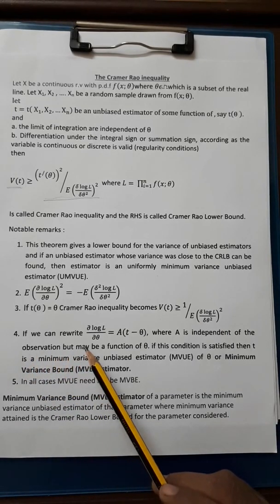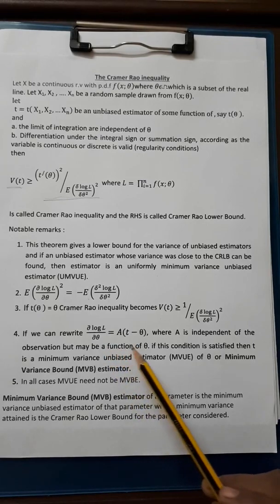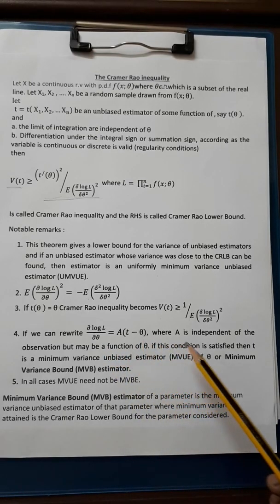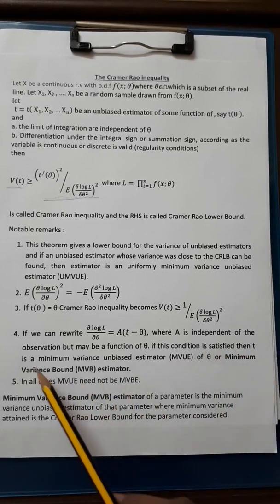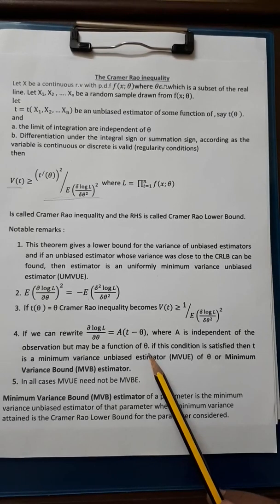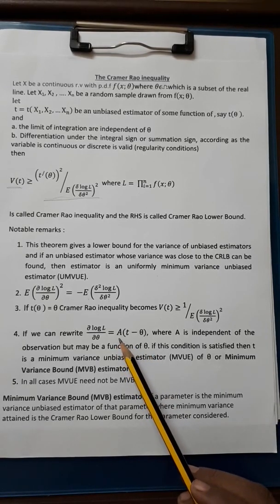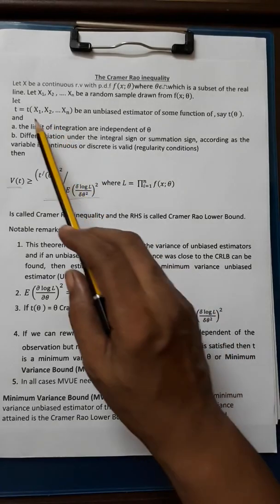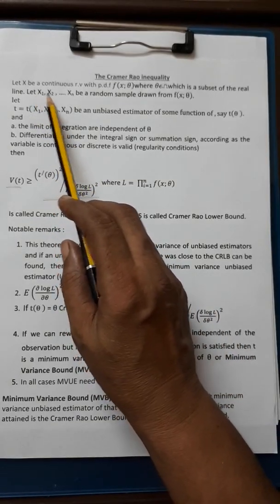If we can rewrite ∂log L/∂θ as a(t - θ) where a is independent of the observation but may be a function of θ. That is, a does not involve any observation function of x₁, x₂, etc.